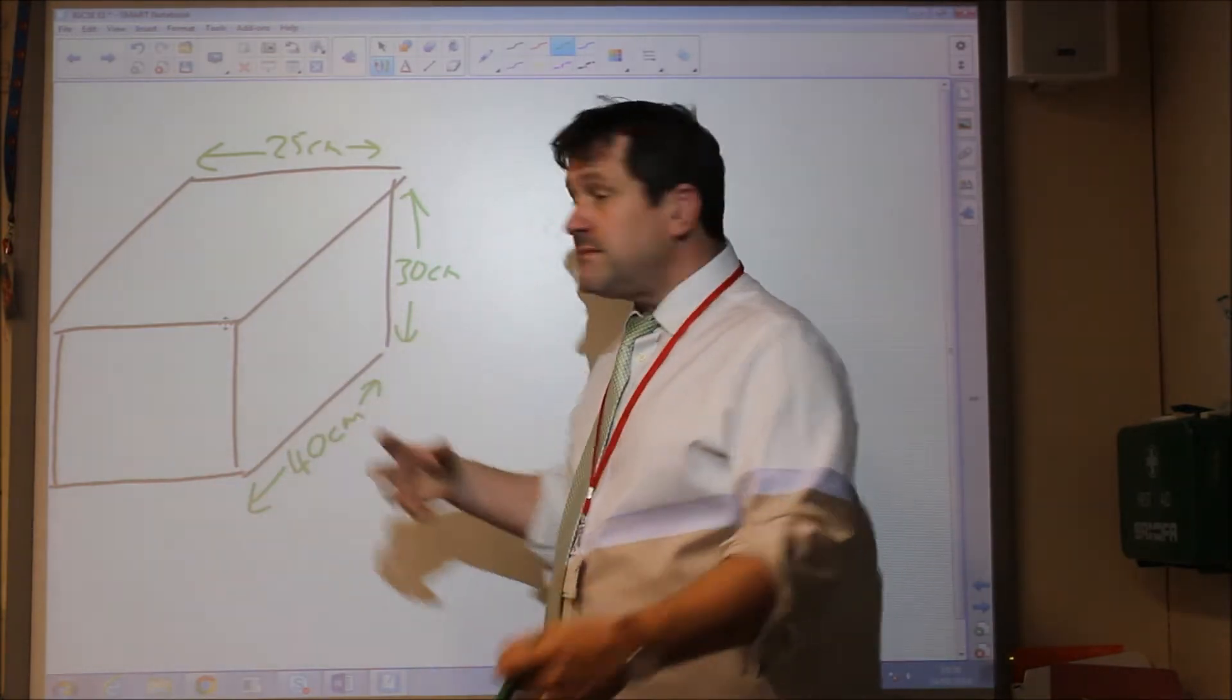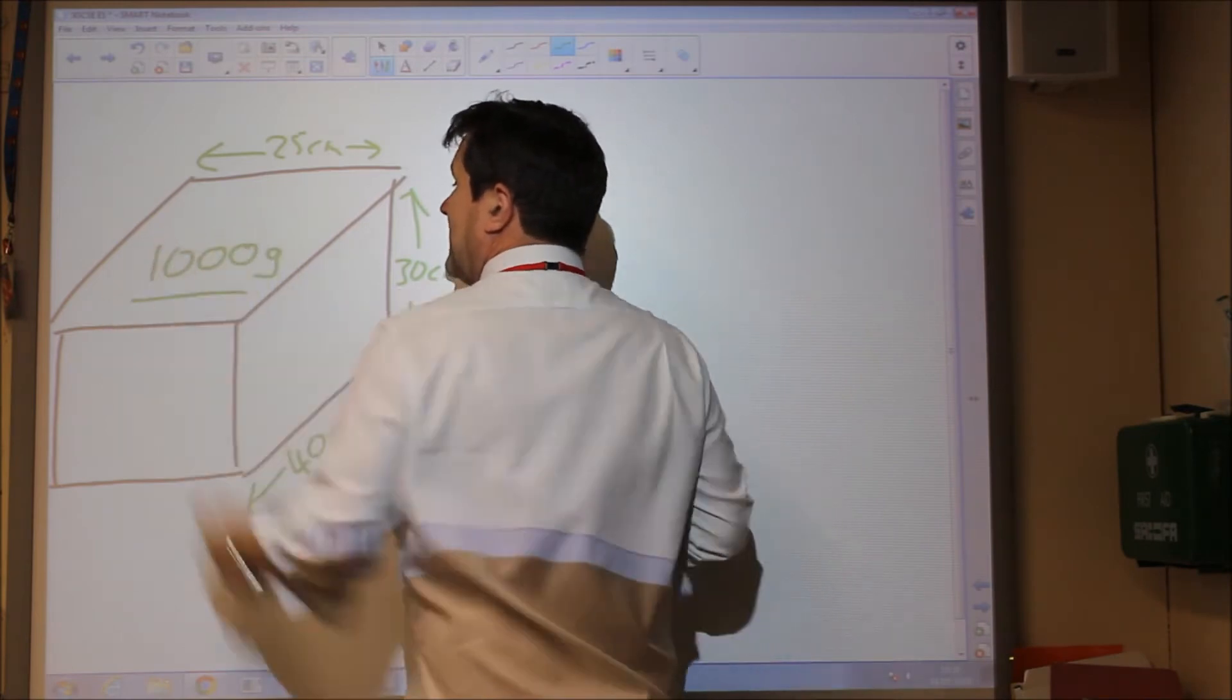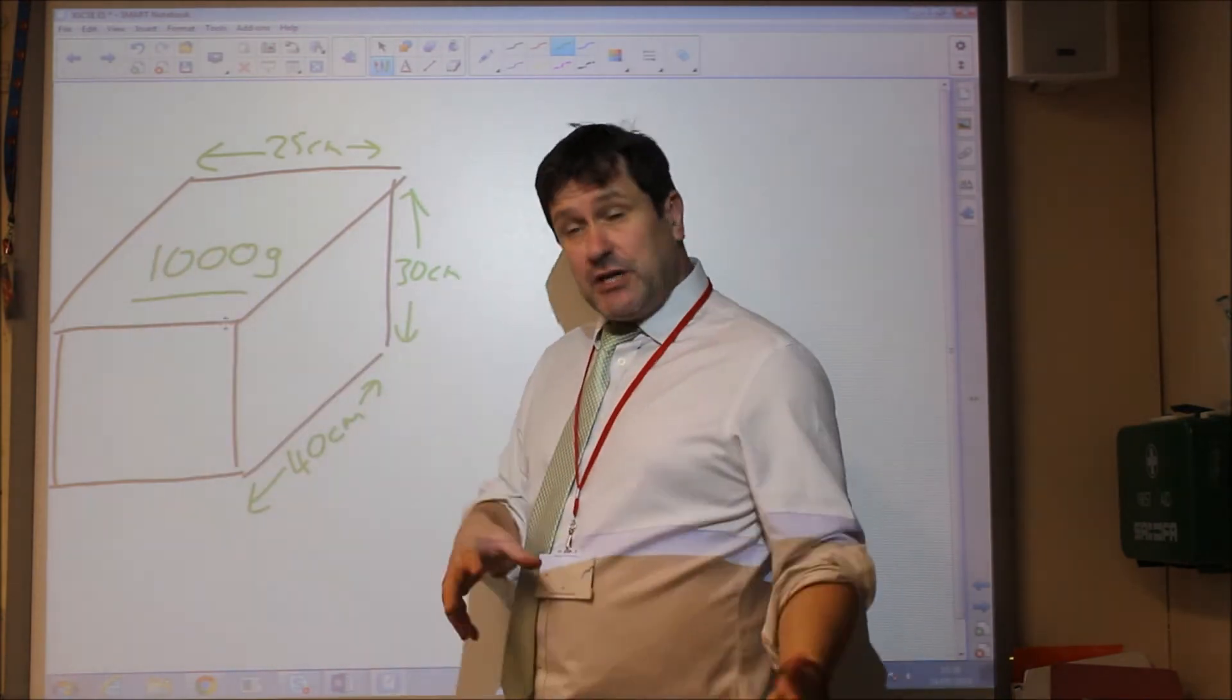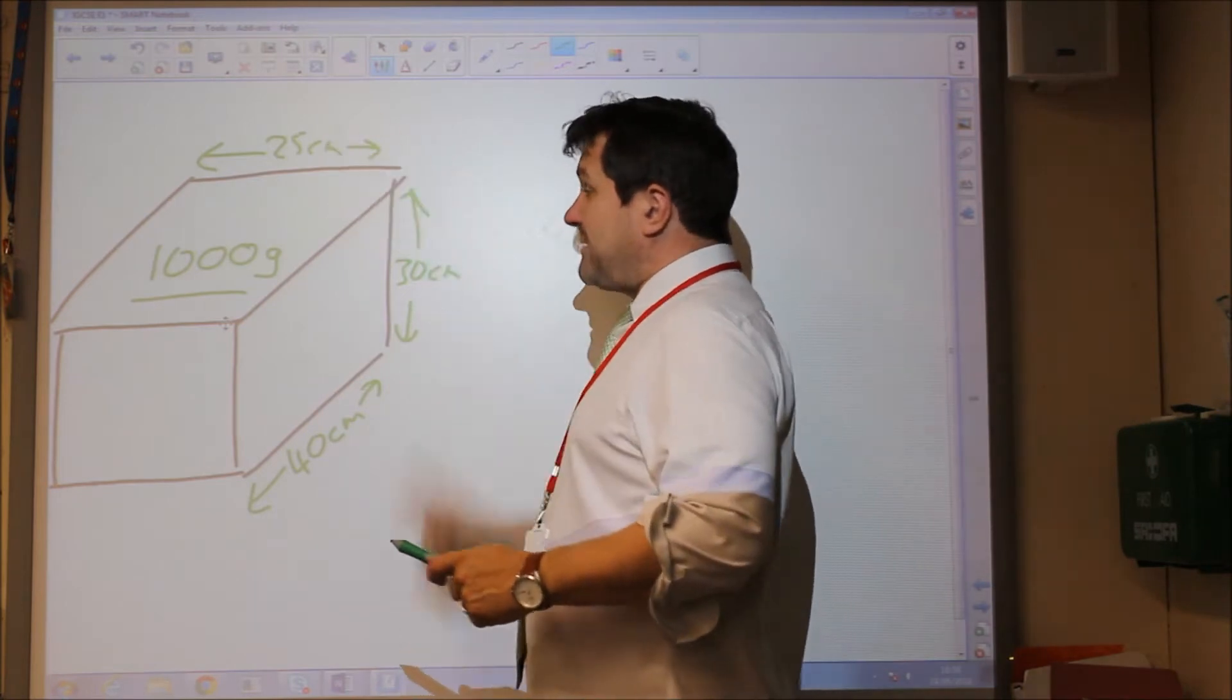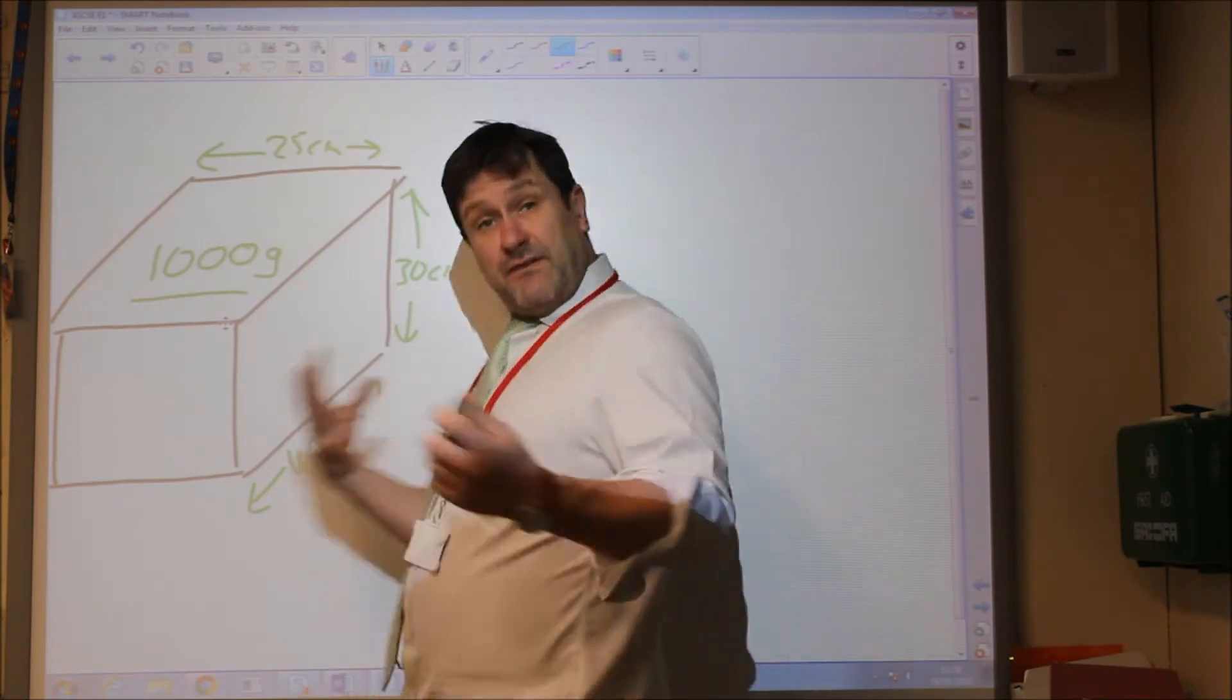And if the mass was given in grams, we could also work it out in grams per centimetre cubed. So we could do exactly the same thing, and the units would be different. They'd now be in grams per centimetre cubed.